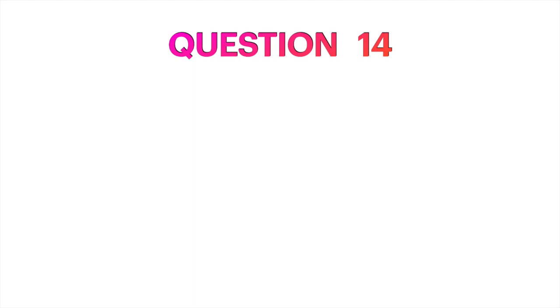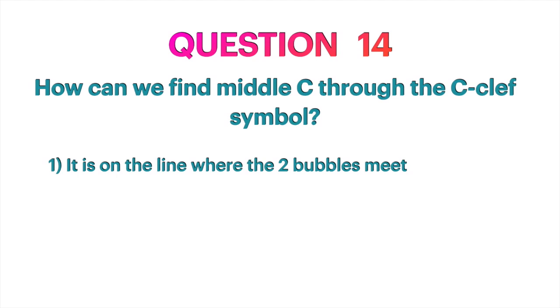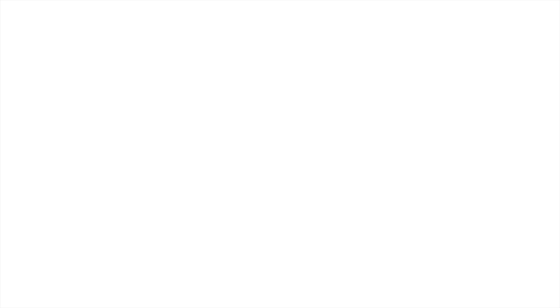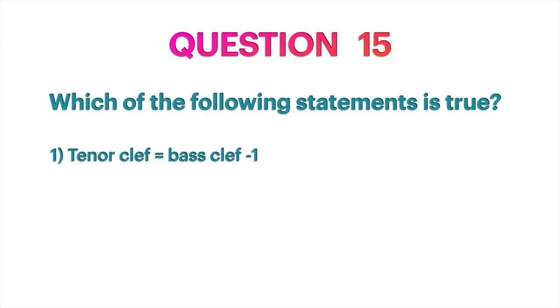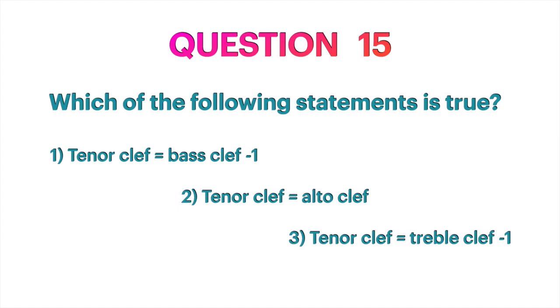Question 14: How can we find middle C through the C clef symbol? It is on the line where the two bubbles meet? We count? We see where the dots are? Question 15: Which of the following statements is true? Tenor clef equals bass clef minus one? Tenor clef equals alto clef? Tenor clef equals treble clef minus one?